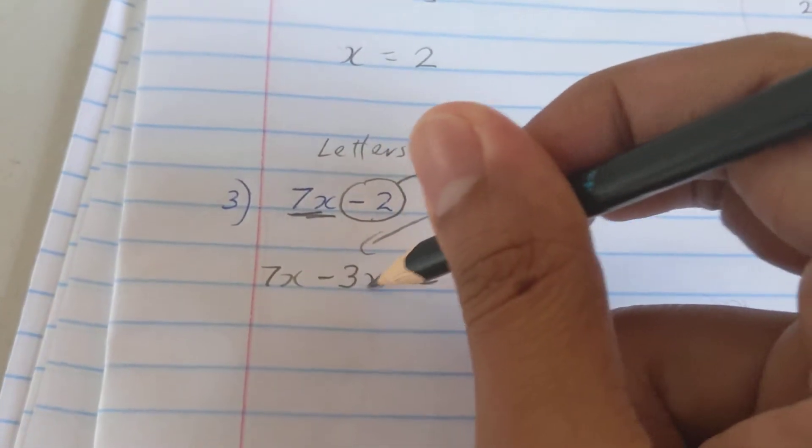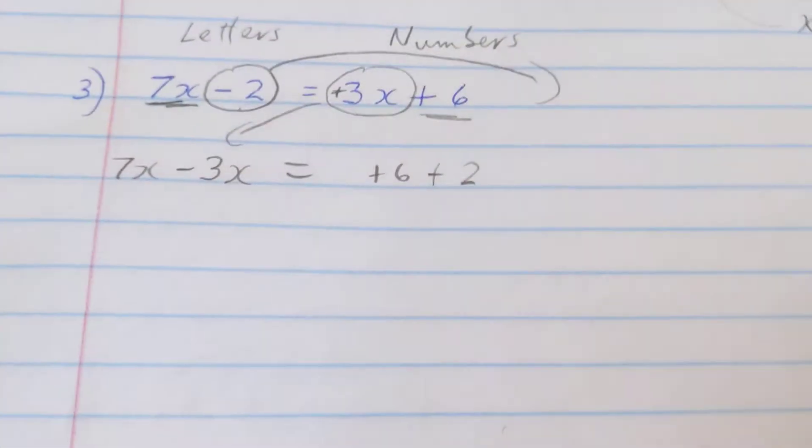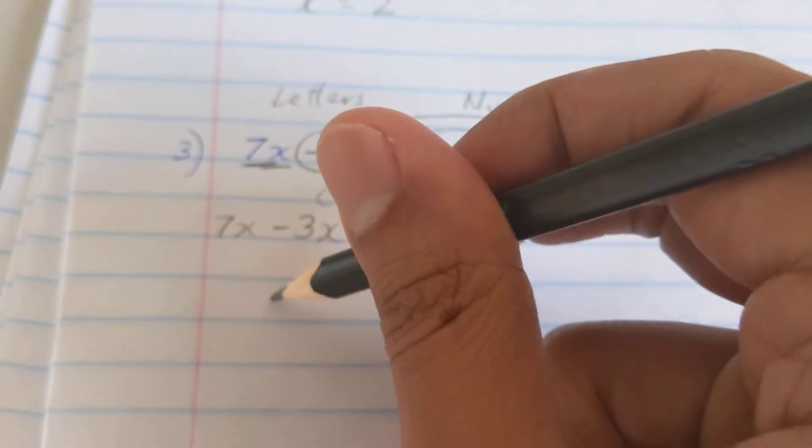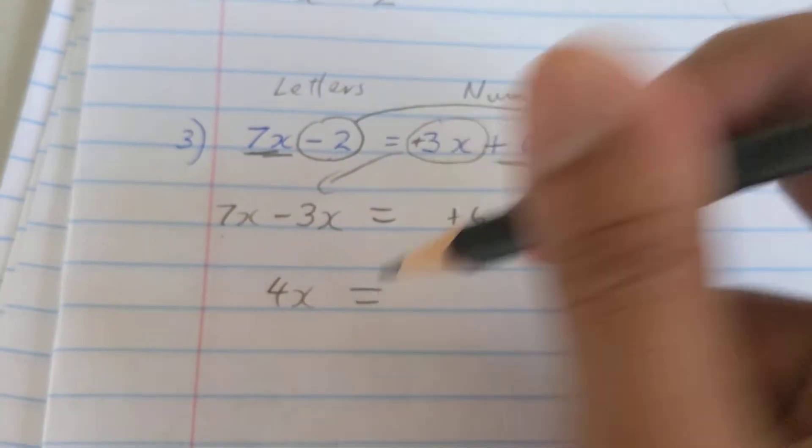Now I end up with this step here which I could work out. 7x take away 3x, 7 take away 3, I'm gonna get 4x. 6 plus 2 is 8. And once again I reach that same step that I want.